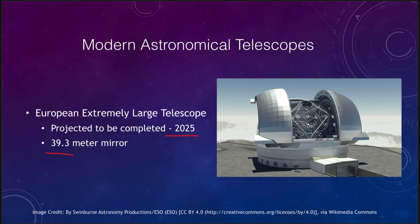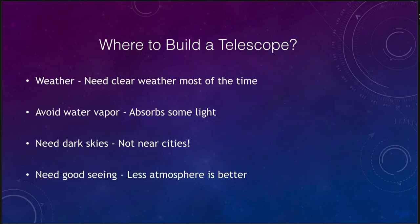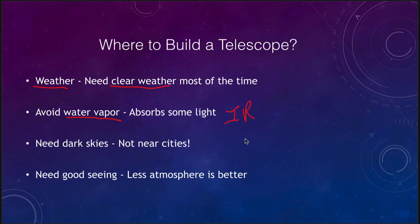So where do we want to build a telescope? There are a couple of key considerations. First, we want to look at the weather — we want areas with clear weather, since cloudy, rainy, or snowy conditions mean many days where you simply cannot observe. We also want to avoid water vapor, which absorbs some of the light, especially infrared. To observe in the infrared from Earth's surface, we need to get up high in the atmosphere above most of the water vapor.